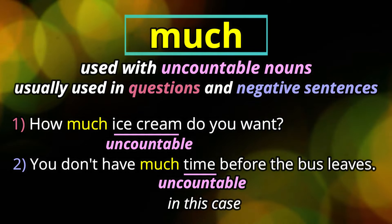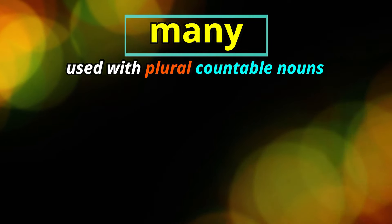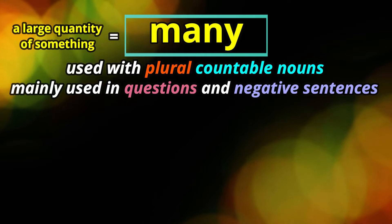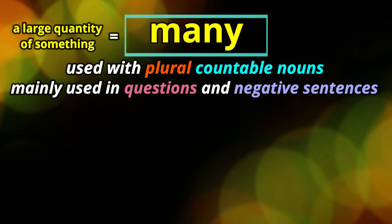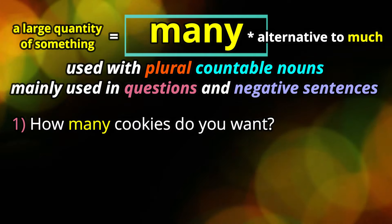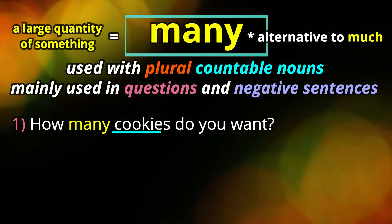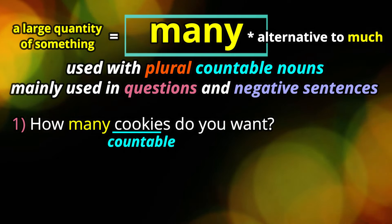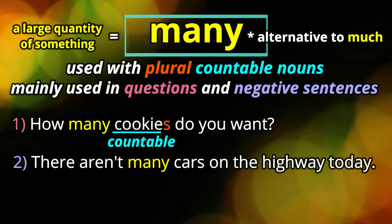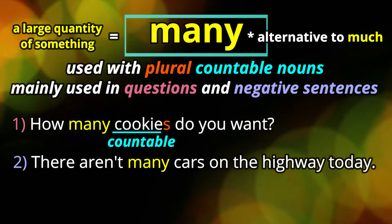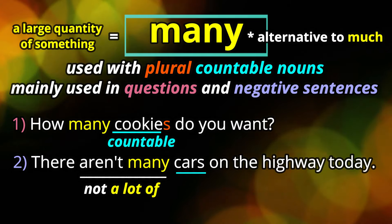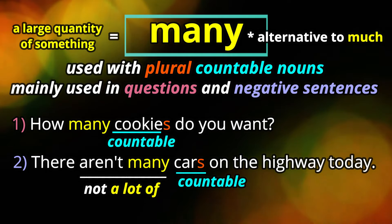Now let's look at many. Many is used with plural countable nouns. It's mainly used in questions and negative sentences. Similar to much, it refers to a large quantity of something, but many is the alternative to much because many quantifies countable nouns. Like in the first example: how many cookies do you want? Cookie is a countable noun — I can count cookies: one, two, three. In the second example: there aren't many cars on the highway today. Many means a large quantity, so if we say there aren't many, we mean there are not a lot of cars. Car is a countable noun — that's how you know which one to use.